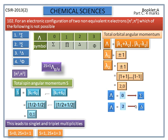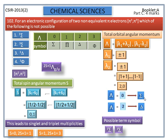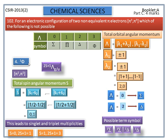Now we have the Λ values and spin multiplicities. The possible term symbols for the π1, π1 system are: singlet sigma, triplet sigma, singlet delta, and triplet delta. Checking the options: singlet sigma is possible, triplet sigma is possible, triplet delta is possible, but triplet pi is not possible. Therefore, for a two non-equivalent pi electron configuration, ³Π is not possible, and the correct answer is the 4th option.